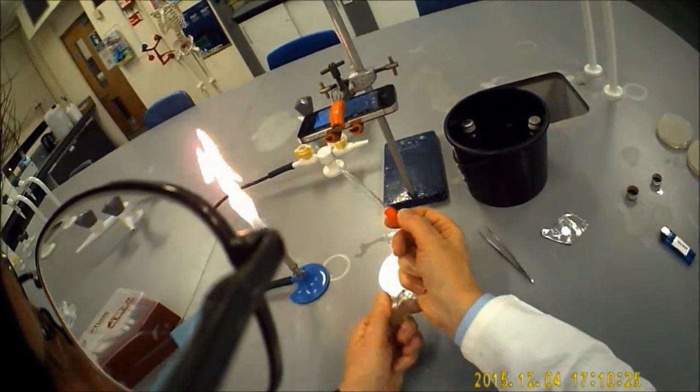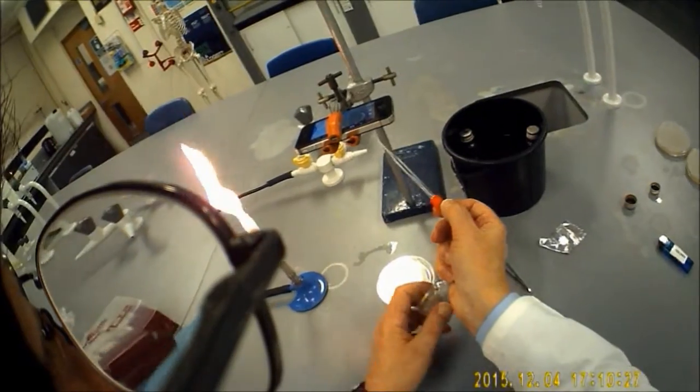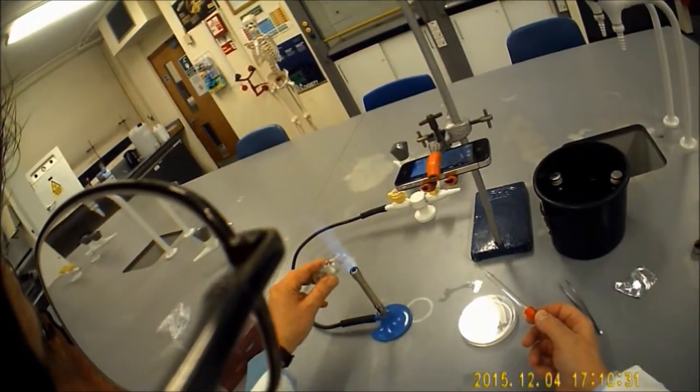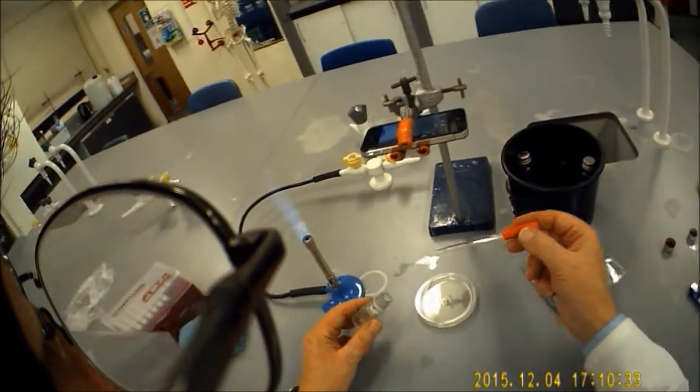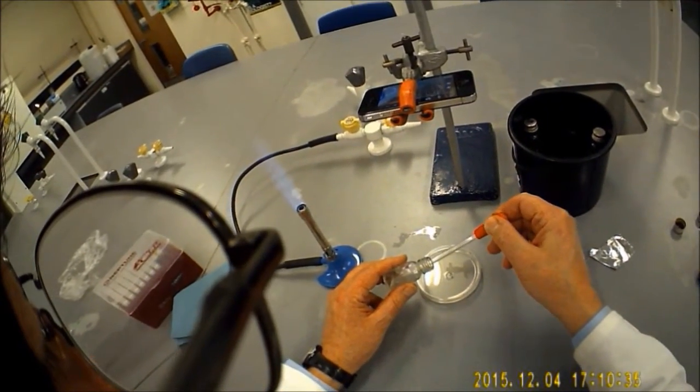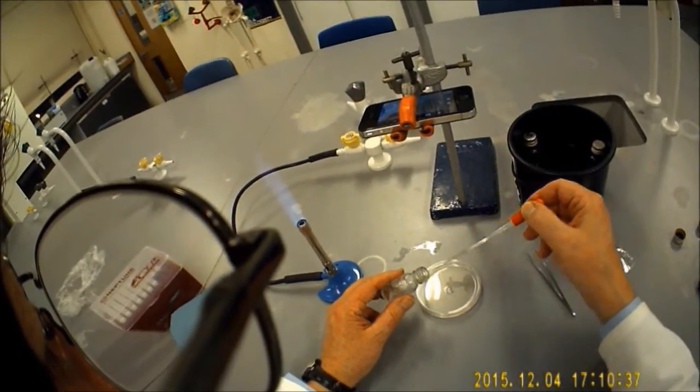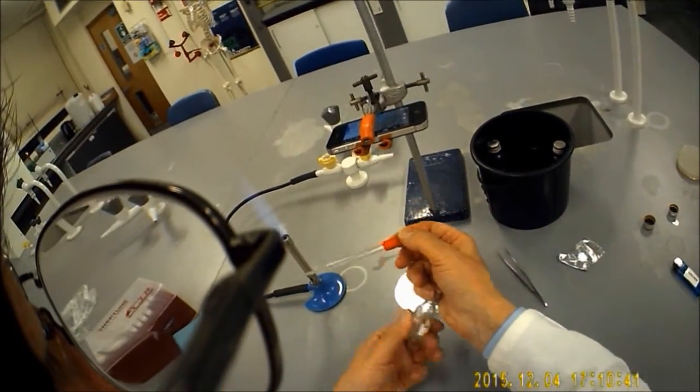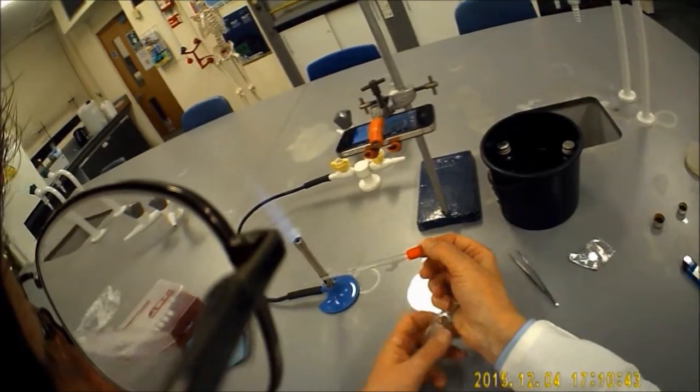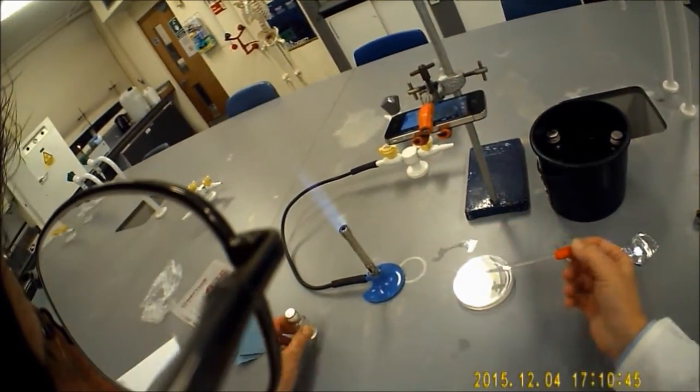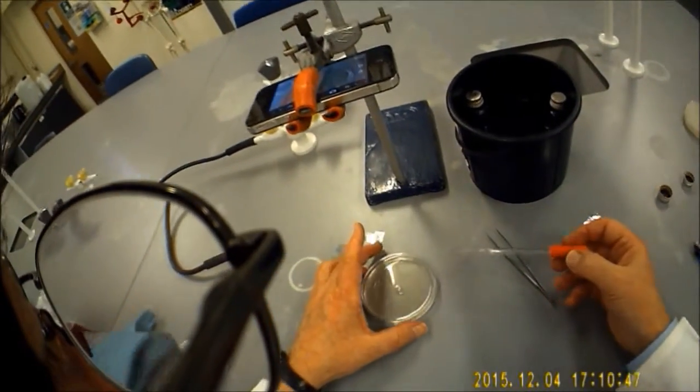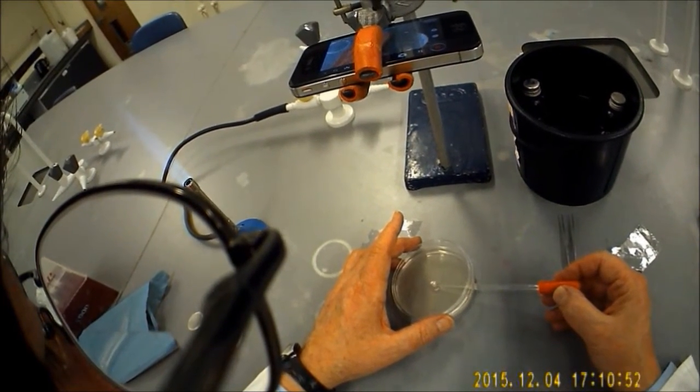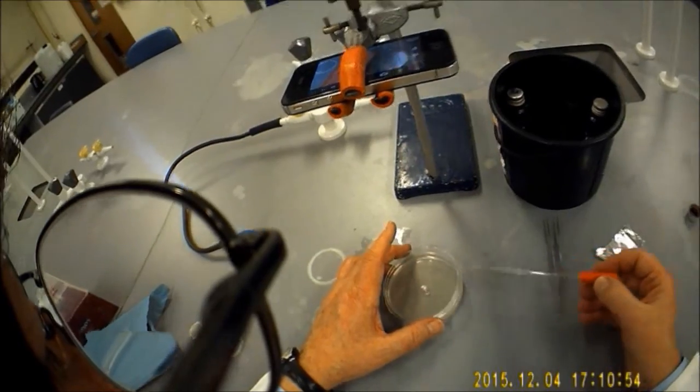So again, aseptic conditions. I'm going to sterilize the mouth of my bottle. This is a sterile pipette. You don't actually need very much to fill the well because don't forget you've put a little bit of agar in the bottom of it. So we're just going to reach underneath and pop some into the well there.